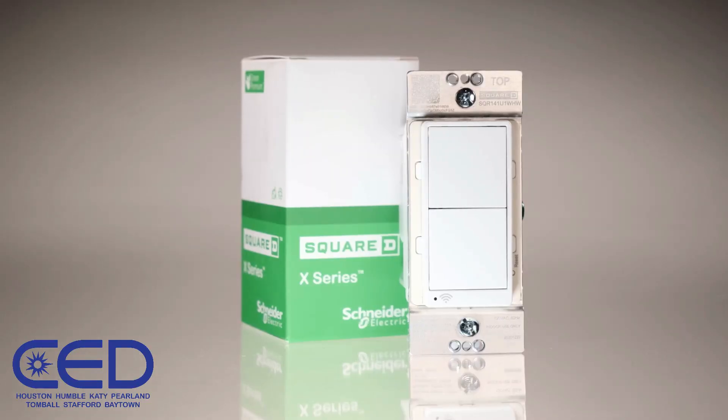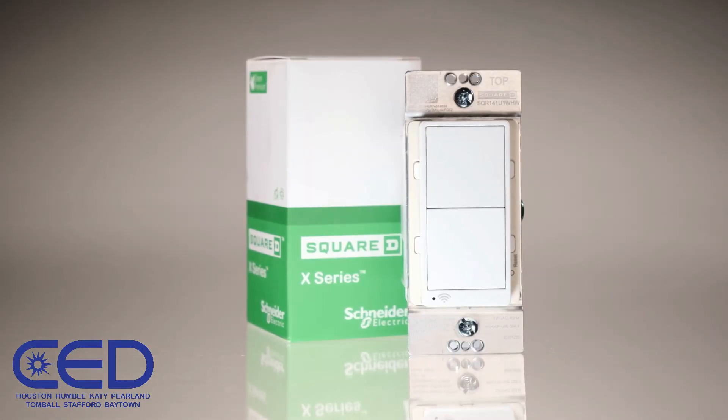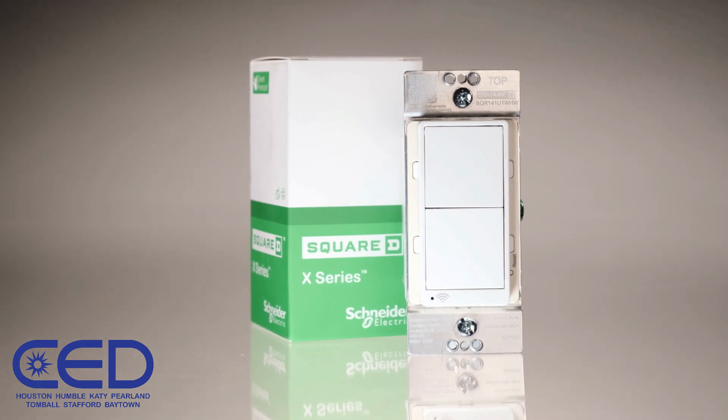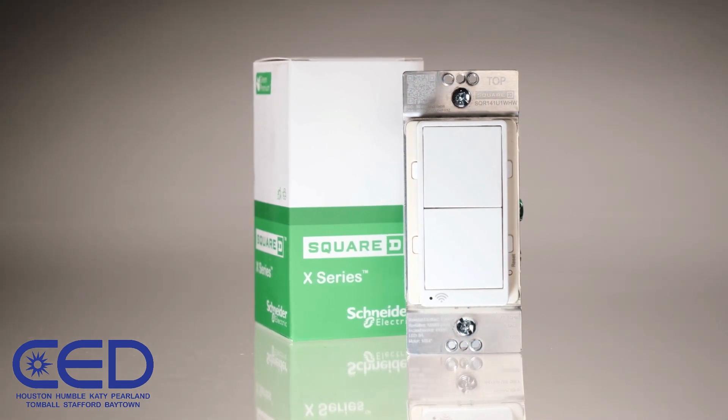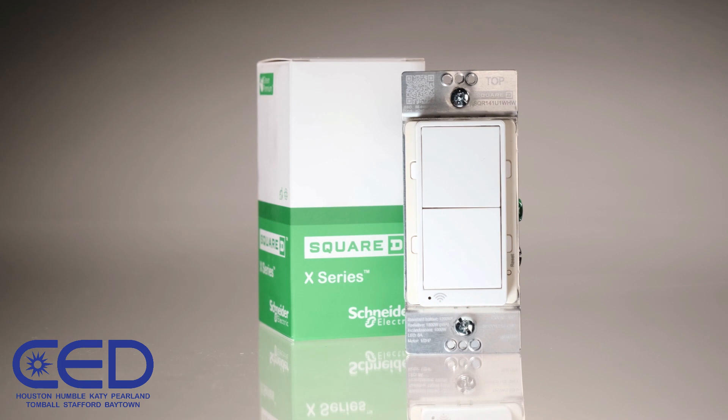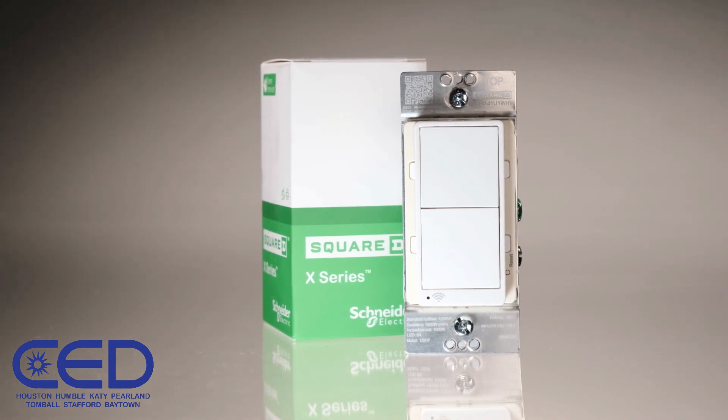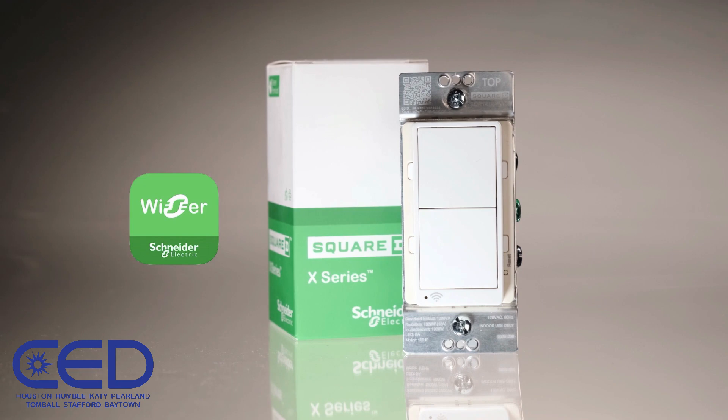These switches and dimmers replace standard controls and provide smart home features such as scheduling, remote on-off, and energy monitoring. There is a separate video on commissioning the device onto the network using the Wiser Home by Schneider Electric app.